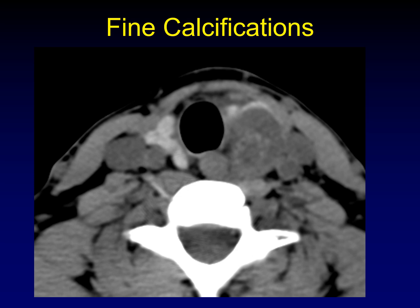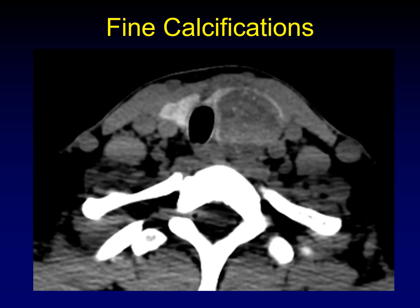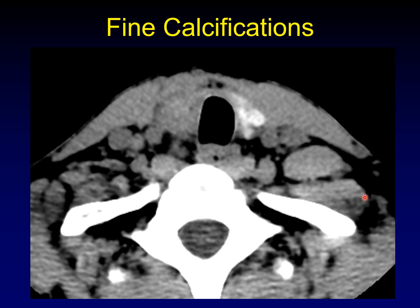How fine do the calcifications need to be to be considered fine calcifications? Look at this example on an unenhanced CT — you can barely make out the hyperdensity in the center of the mass. These are multiple tiny calcifications, none of which is discretely evident on CT because it doesn't have the resolution the way a mammogram has. This is what we're looking for — this easy increased density. Here's another example where you can see punctate dots scattered throughout the mass. Fine calcifications can just look like a haze; your only real clue is that on an unenhanced scan you shouldn't be seeing anything so dense here.